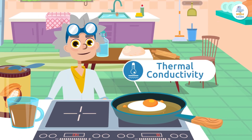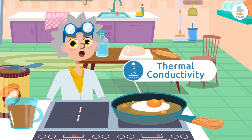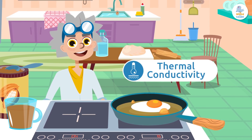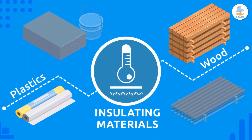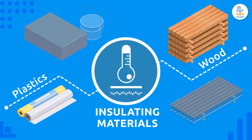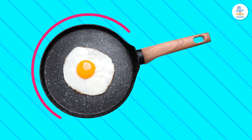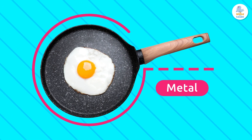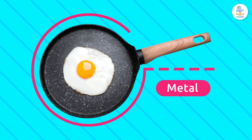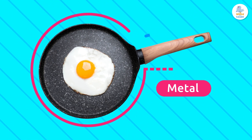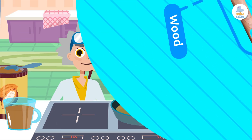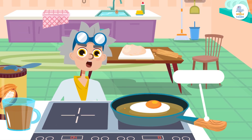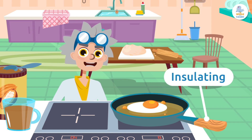Thermal conductivity. Thermal conductivity is the property of materials to transmit heat, like metals do. Materials that don't transmit heat are known as insulating materials, like plastics or wood. If you look at this pan, it is made of metal so it heats up and allows us to cook food. However, its handle is made of wood so that we can hold it — this wooden handle is insulating, otherwise we would burn ourselves.